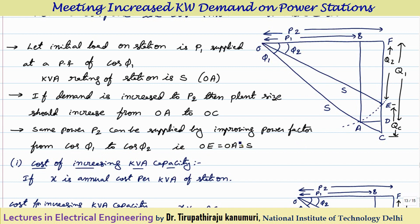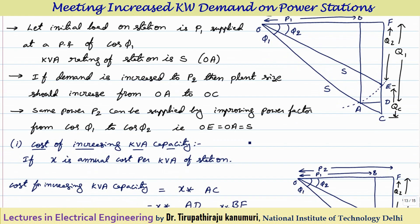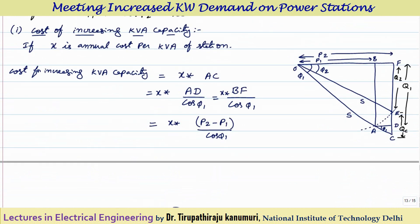AC will be the extra capacity that should be increased. The same power P2 can also be supplied by improving the power factor — the same KVA rating intersects at point E by improving the power factor from cos phi 1 to cos phi 2. OE = OA = S, unchanged, by installing power factor correction equipment. Now, for the cost of increasing the KVA capacity — that is AC — if X is the annual cost per KVA rating of the station, then the cost for increasing KVA rating equals X multiplied by the extra KVA required, which is AC. Since the angle is phi 1, AC = AD / cos phi 1.